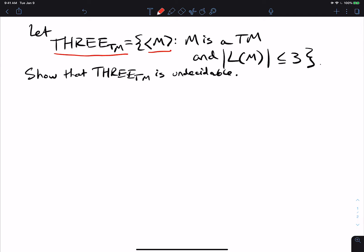It has a bunch of Turing machine descriptions in it. And the criteria for this Turing machine to be in 3TM is if the size of its language, i.e., the number of strings that the Turing machine accepts, is at most three. So if the Turing machine accepts four strings or more, then it's not in 3TM. And if it accepts at most three strings, it is in 3TM.